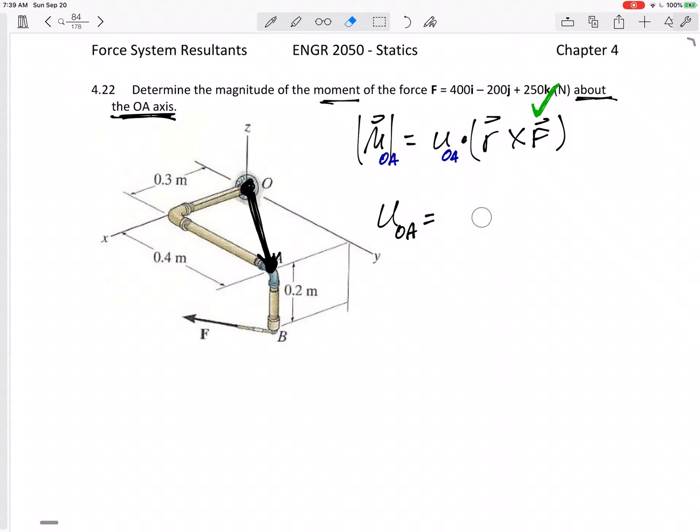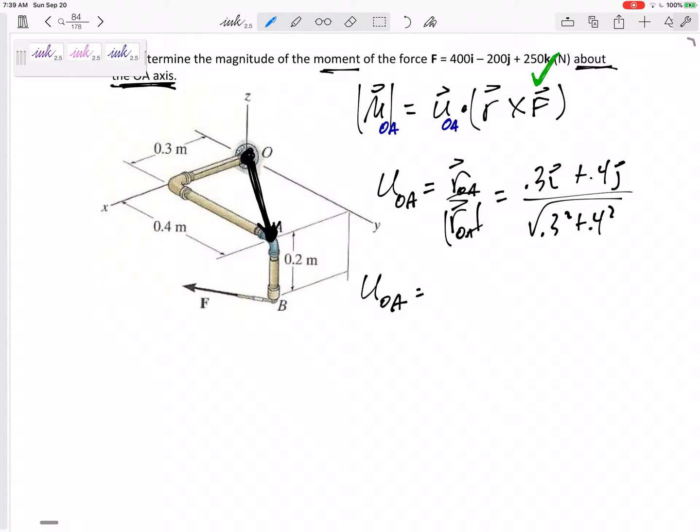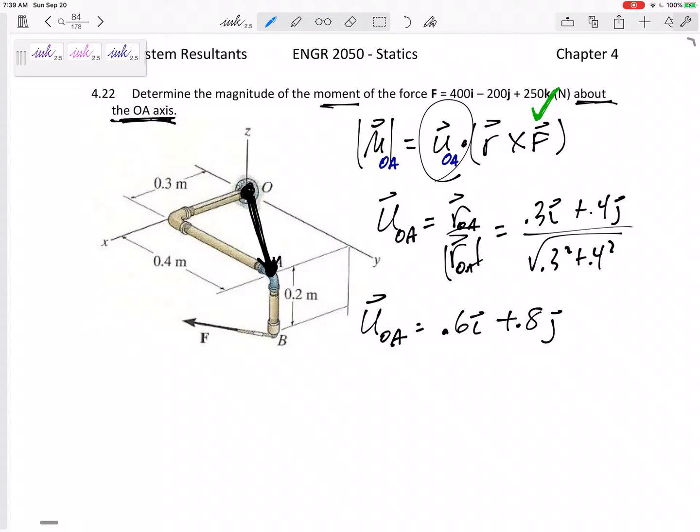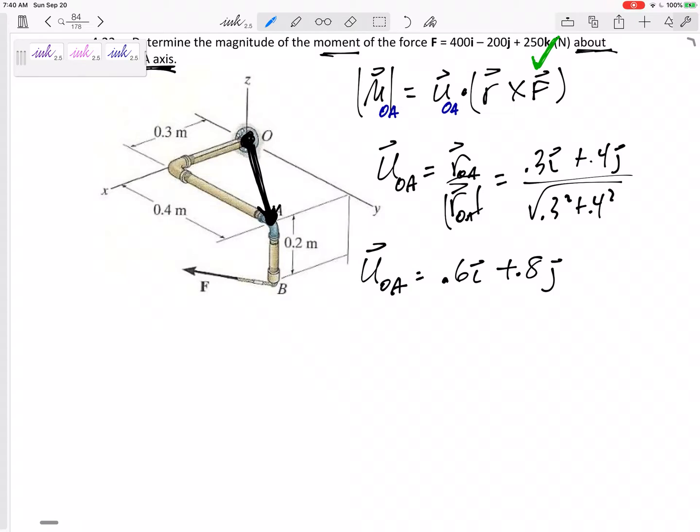The u is r over the magnitude of r. What's the position vector from O to A? How far does it go? 0.3 in the x, 0.4 in the y, nothing in the k. Square root of 0.3 squared plus 0.4 squared. So the u would be 0.6i plus 0.8j. Why did I divide this by its magnitude? Because the equation calls for a u. We divide by their magnitude to get it to be dimensionless, magnitude of one, because that's the definition of a unit vector.